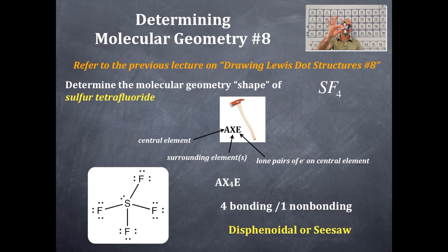Now, lone pairs that I'm holding on to right here require more space. So what has more space? 120 or 90?